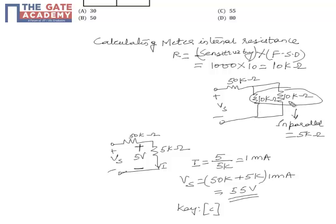Now 10 kilo-ohm and 10 kilo-ohm are in parallel. Whenever two equal resistances are connected in parallel, the equivalent resistance is half of the value, which is 5 kilo-ohm.